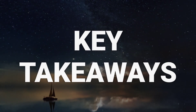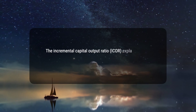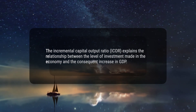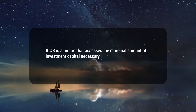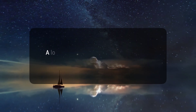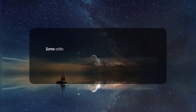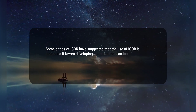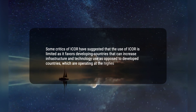Here are four key takeaways. First, the incremental capital output ratio, ICOR, explains the relationship between the level of investment made in the economy and the consequent increase in GDP. Second, ICOR is a metric that assesses the marginal amount of investment capital necessary for a country or other entity to generate the next unit of production. Third, a lower ICOR is preferred as it indicates a country's production is more efficient. Fourth, some critics have suggested that the use of ICOR is limited as it favors developing countries that can increase infrastructure and technology use, as opposed to developed countries which are already operating at the highest level possible.